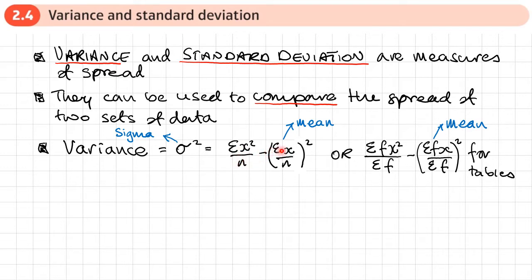This is basically the mean squared. Sum of X over N is the mean, so you find the mean and you square it.